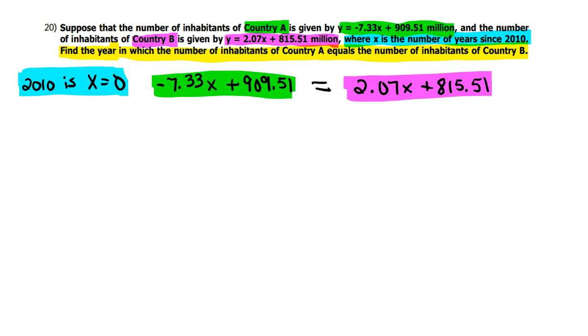Now, I have an equation with nothing but X's in it. So I can solve this for X, and then I would have to add it to 2010 to figure out what the correct year is. Because 2010 is at zero.